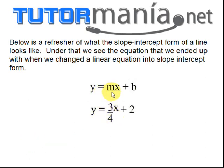Remember that m is the slope and b is the y-intercept. So since we have our equation in slope-intercept form, we know that m equals 3 fourths and that b equals 2.